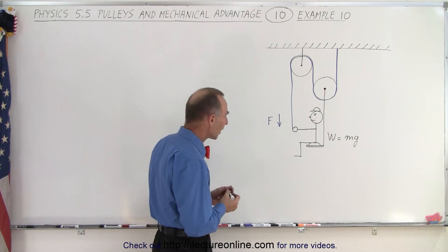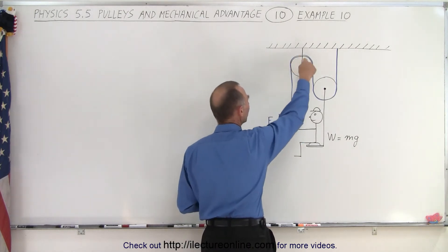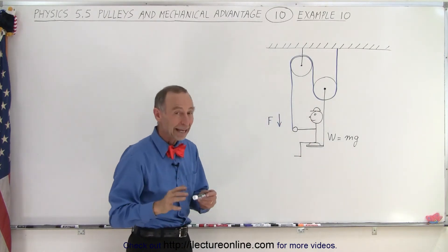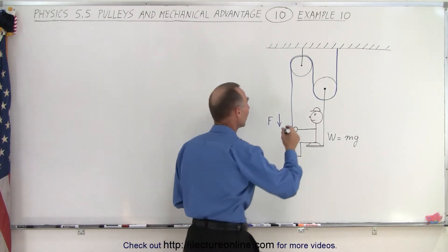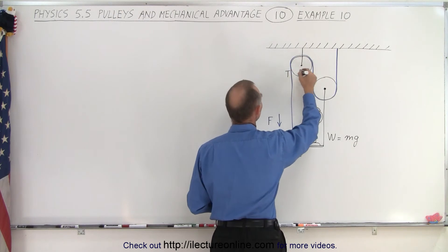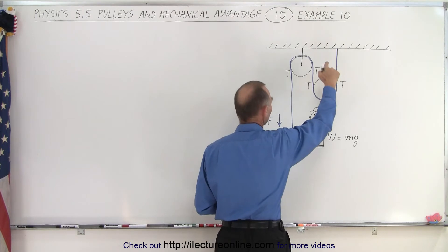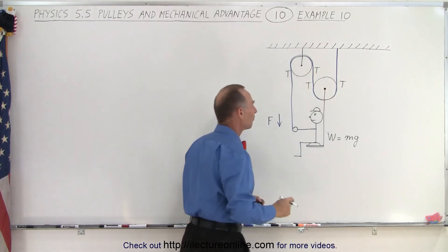So now, since we have this string going around this pulley, this pulley, and up to the ceiling, and assuming that the pulleys have no mass and no friction, if that is the case, that means that the tension on this side must equal the tension on this side, which is the same as the tension here, which is the same as the tension there. In other words, the tension is the same everywhere.